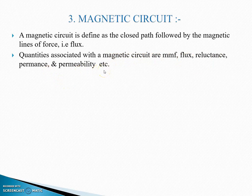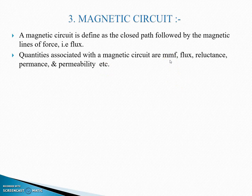जैसे electric circuit के parameters कौन से थे — current, voltage, resistance, inductor, capacitor — ये सारे जो हमने previous video में पढ़े थे ये electric circuit के parameters थे। अभी magnetic circuit के parameters कौन से हैं — MMF, flux, reluctance, permanence and permeability — ये सारे magnetic circuit के parameters हैं। और उसी की definitions, symbols, formula, unit — ये हमें इस video में पढ़ना है।